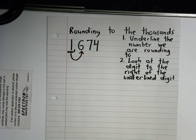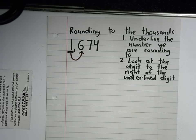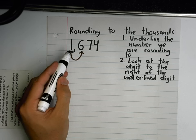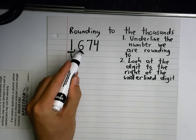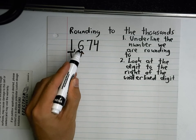What is that number to the right of the underlined digit? David says it's a six. Here's the underlined one, and just to the right of it is a six.